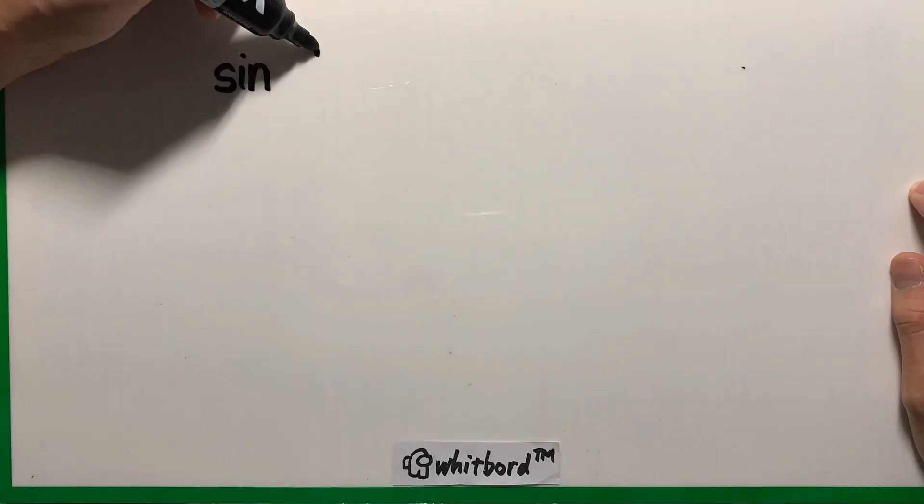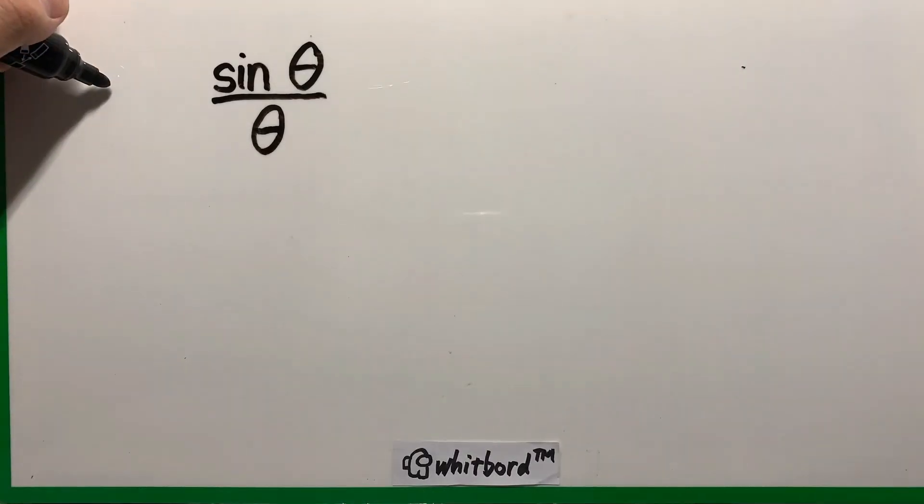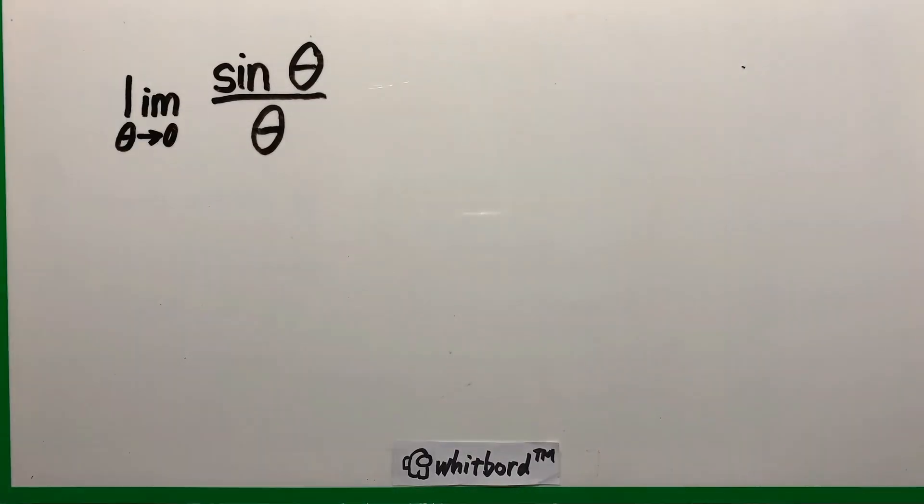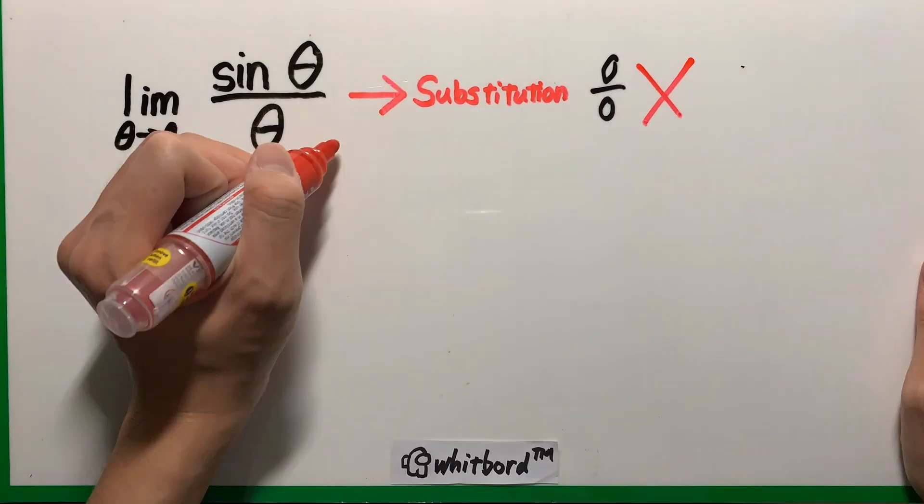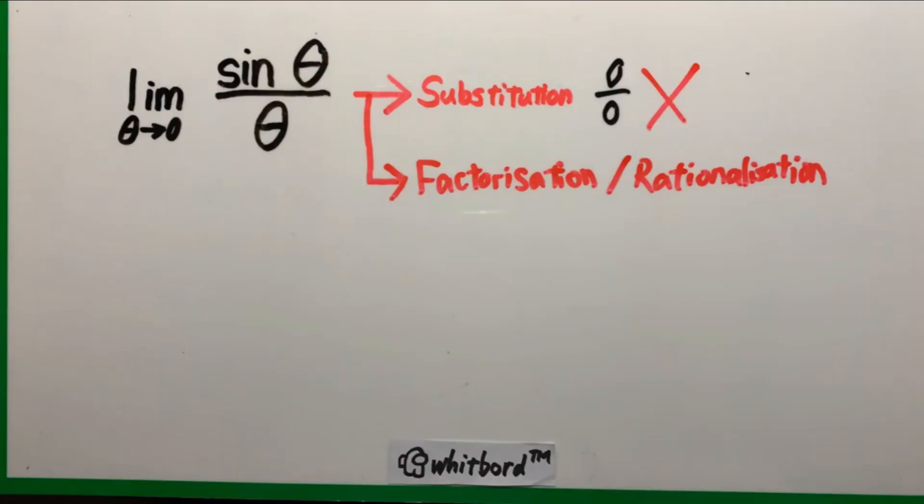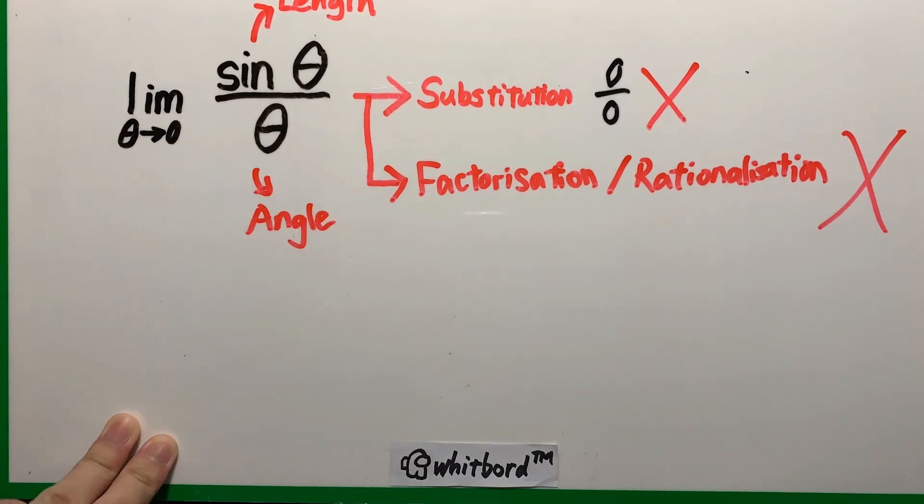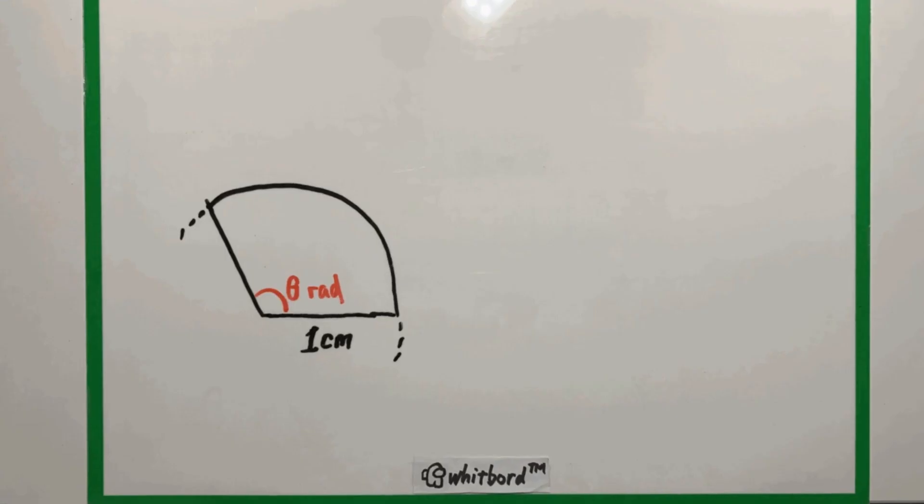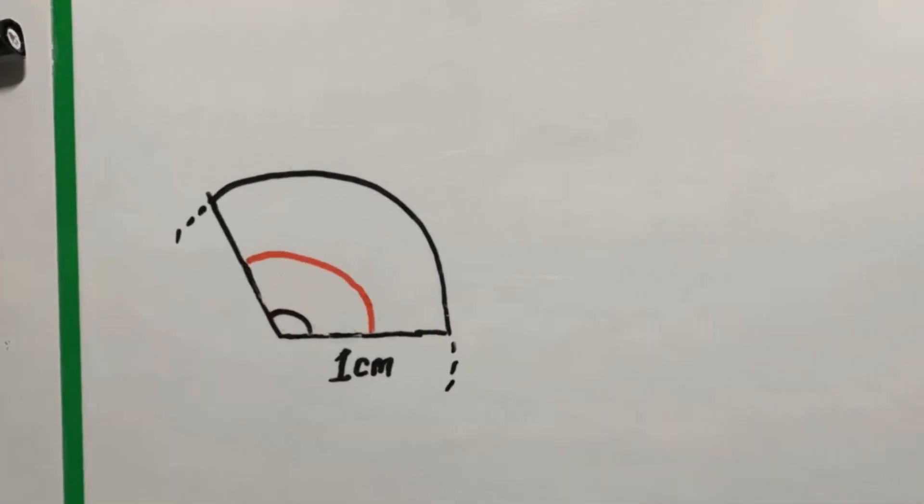There is a classic problem in mathematics asking, what is the value of this expression as it goes to zero? Yes, it's the limit. Substituting theta equals zero directly just gives zero over zero, which is not allowed. And other common tactics don't seem to work either. Plus, you're comparing an angle with a length.